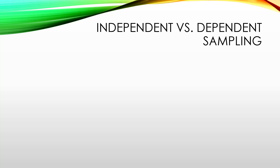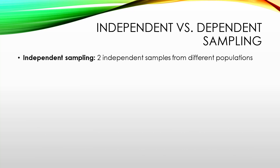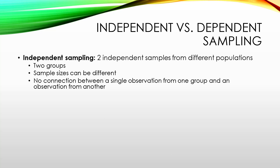There are two different types of sampling we're going to investigate when looking at the difference in population means, and it's important to know which type you're using. For independent sampling, we have two independent samples from different populations — two completely separate groups. The sample sizes can be the same or different; you can take a sample size of 10 and a sample size of 20. There's no connection between a single observation from one group and an observation from another — you're not measuring the same person twice. The target parameter is just the difference in the means.